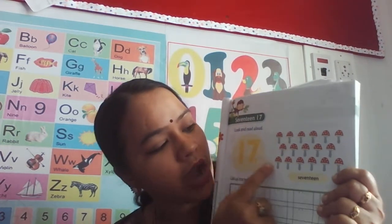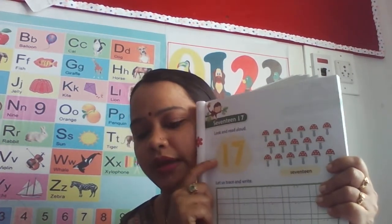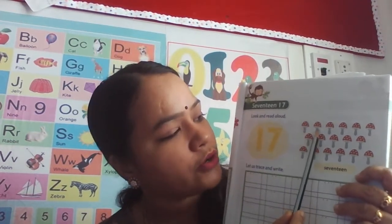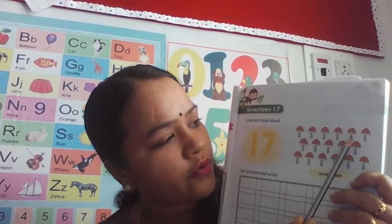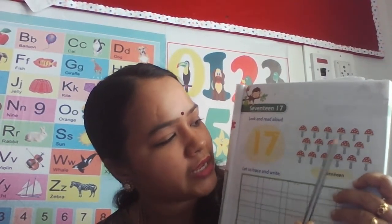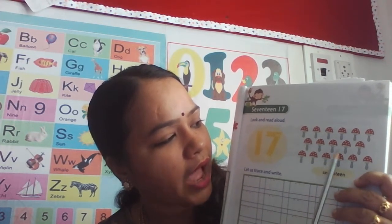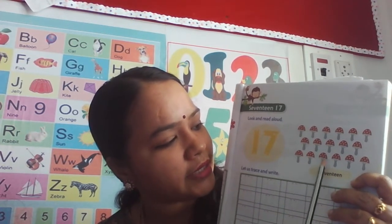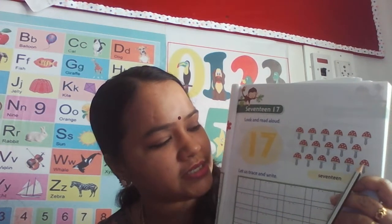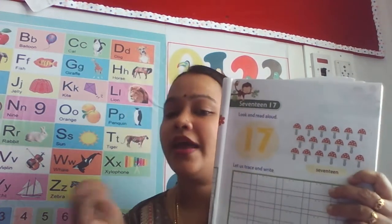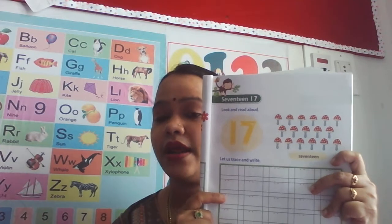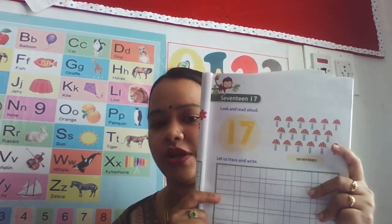Now let us count how many mushrooms are here in this picture. Count along with me: one, two, three, four, five, six, seven, eight, nine, ten, eleven, twelve, thirteen, fourteen, fifteen, sixteen, seventeen. There are seventeen mushrooms in the picture.